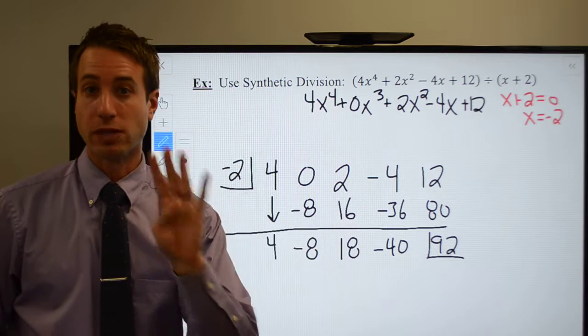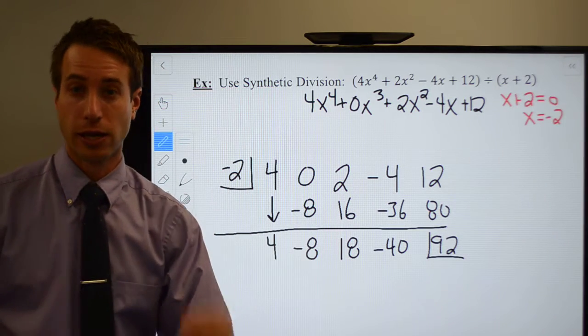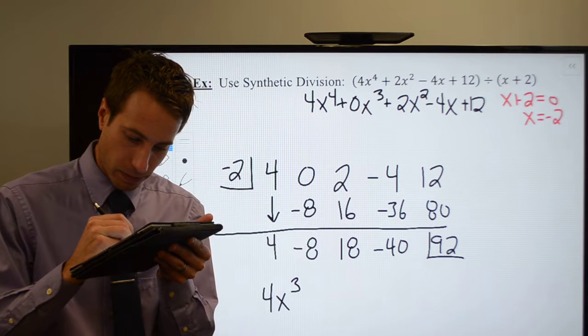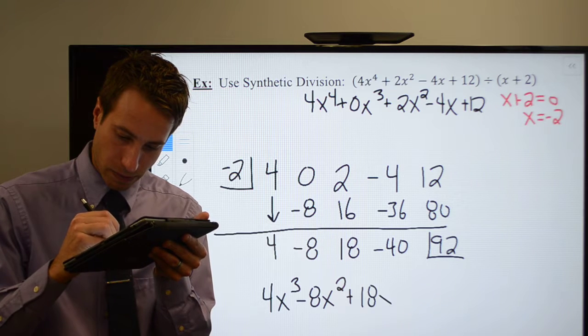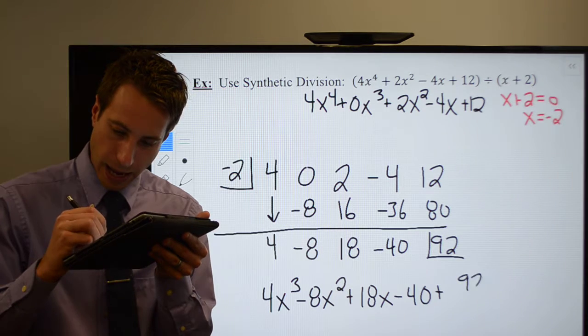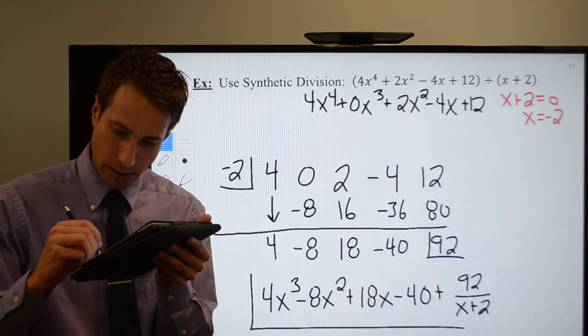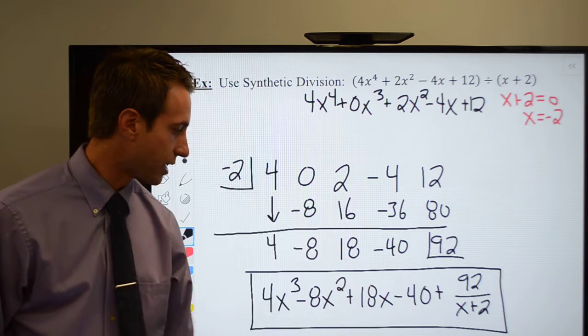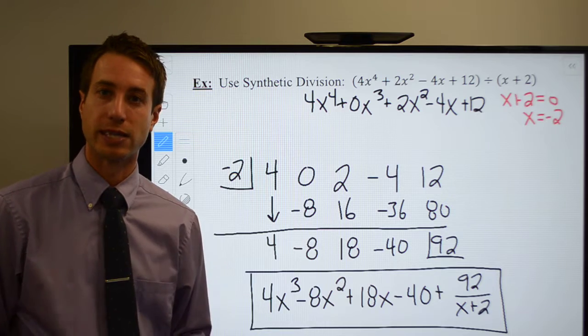My original polynomial was a 4th degree polynomial, so my answer is going to be a 3rd degree polynomial: 6x³ + 4x² + 8x + 28. That 92 gets written over my original divisor because it is my remainder. We write it over top of the divisor, and this is my reduced polynomial, the result of doing synthetic division.